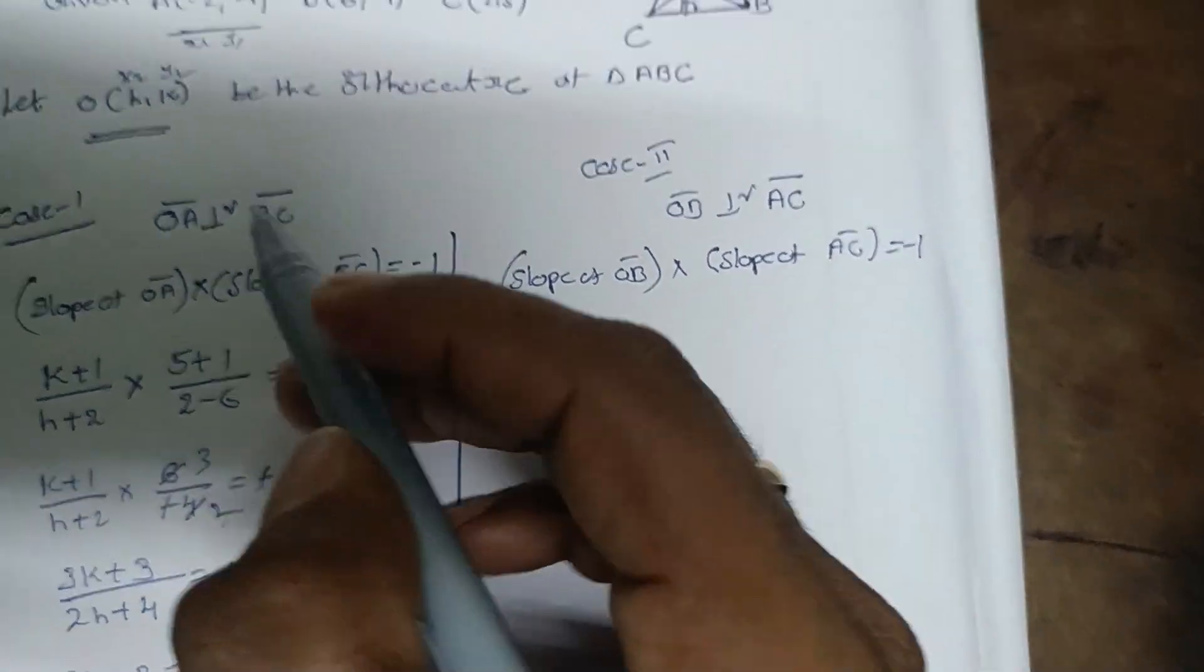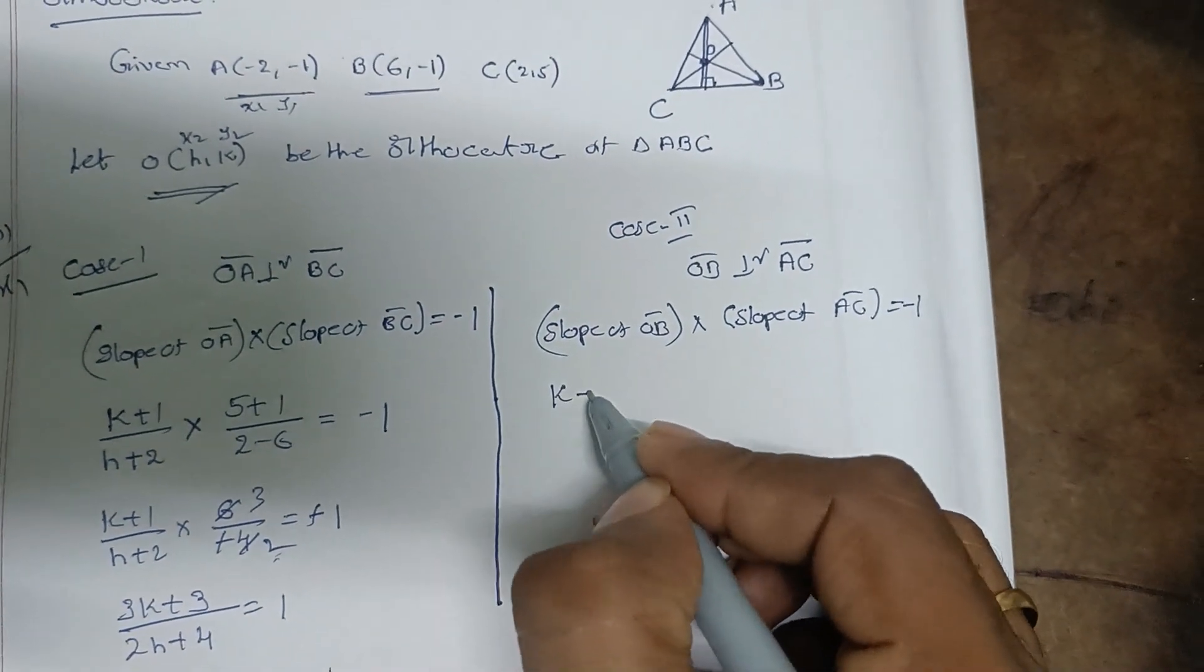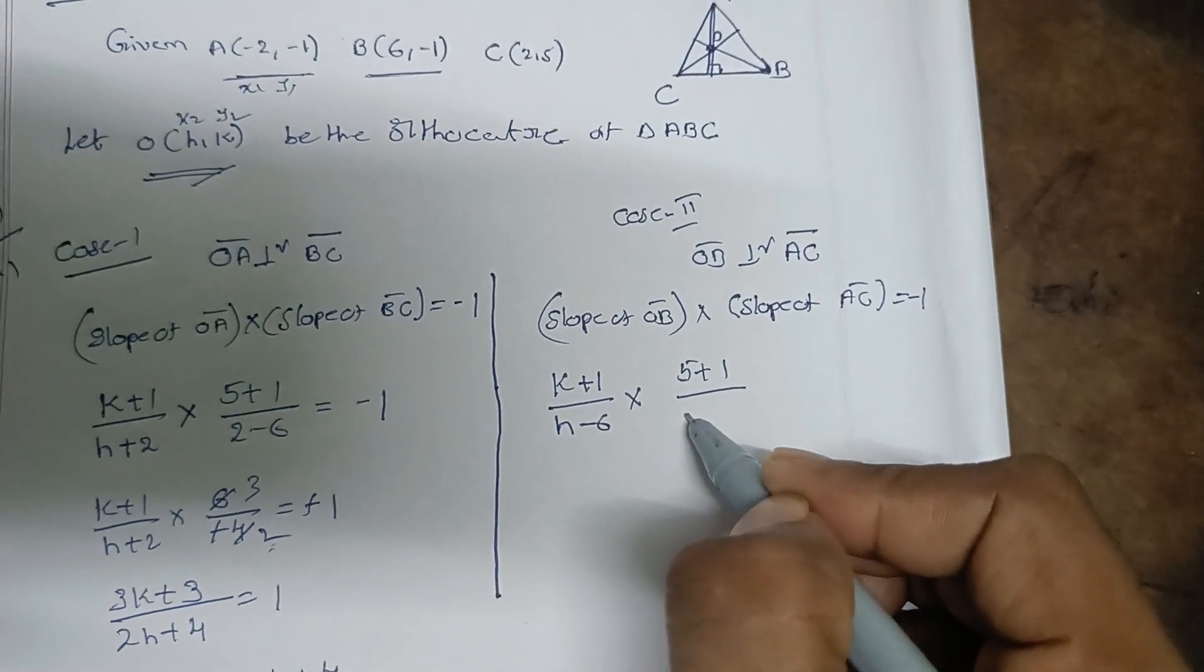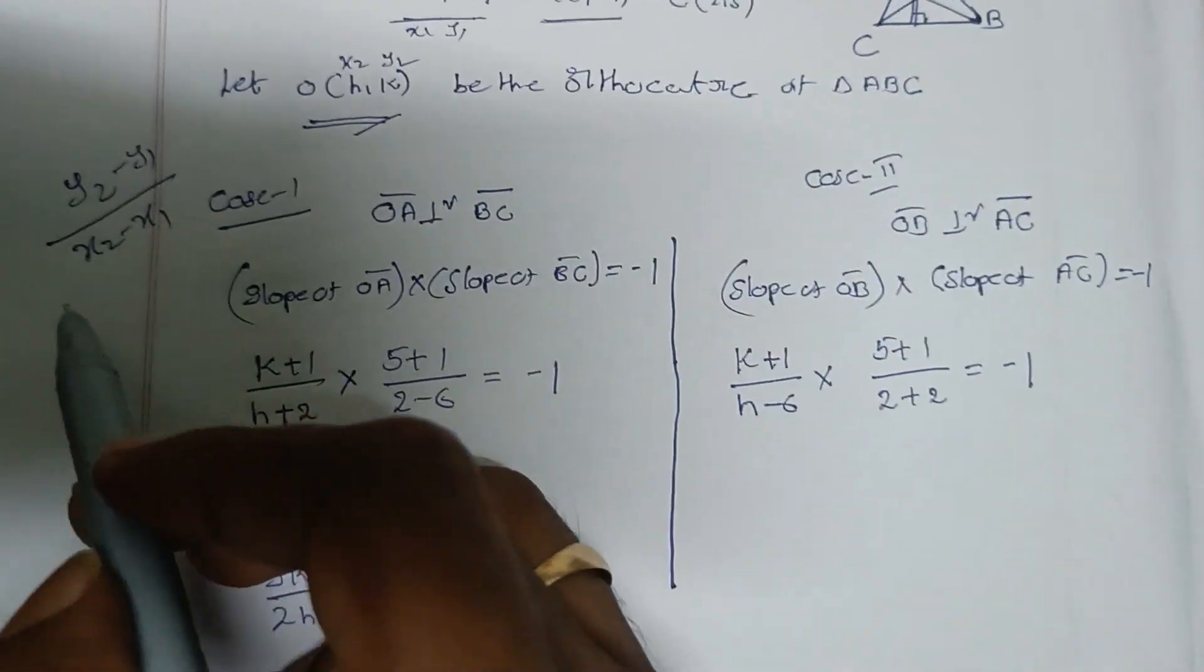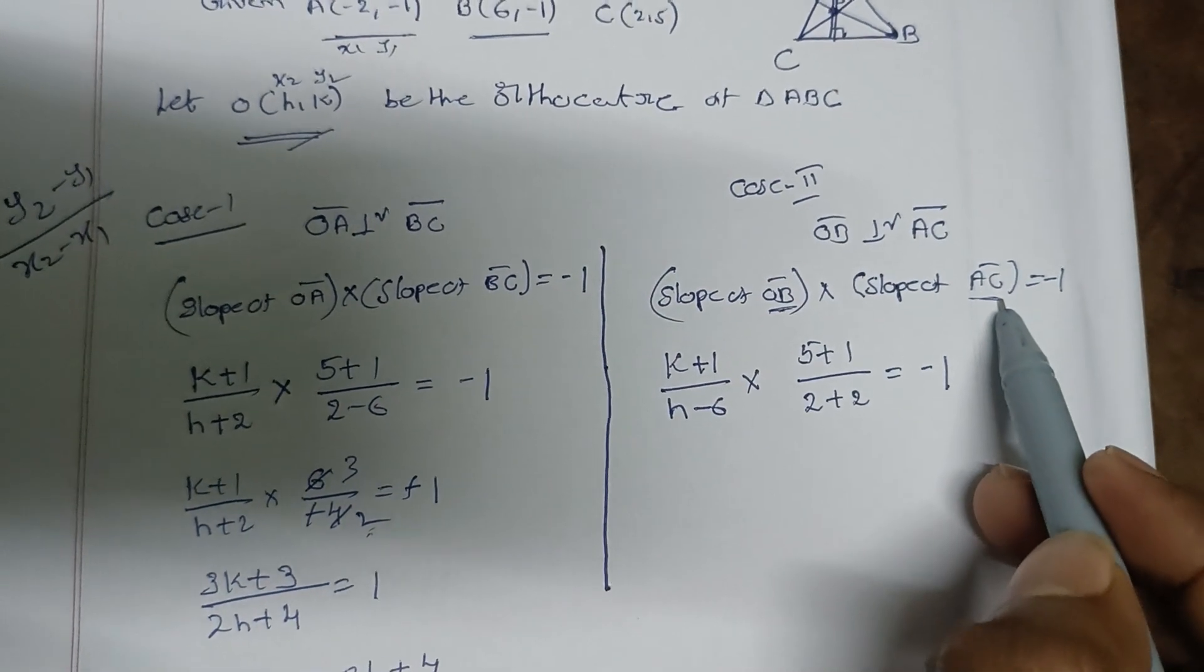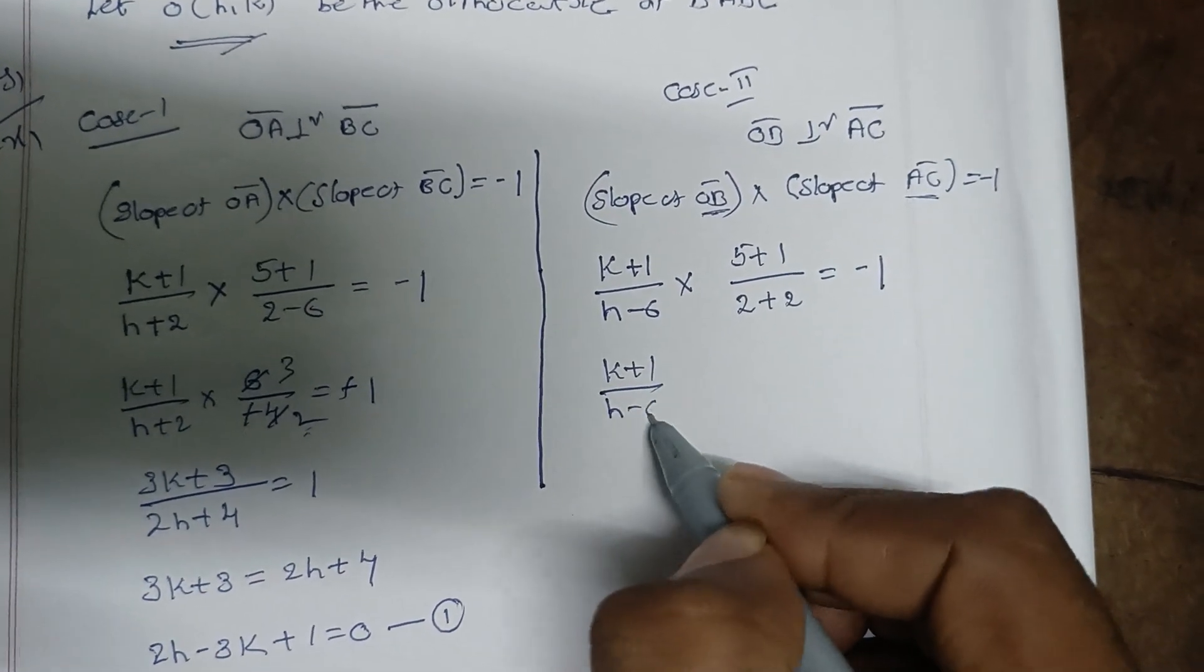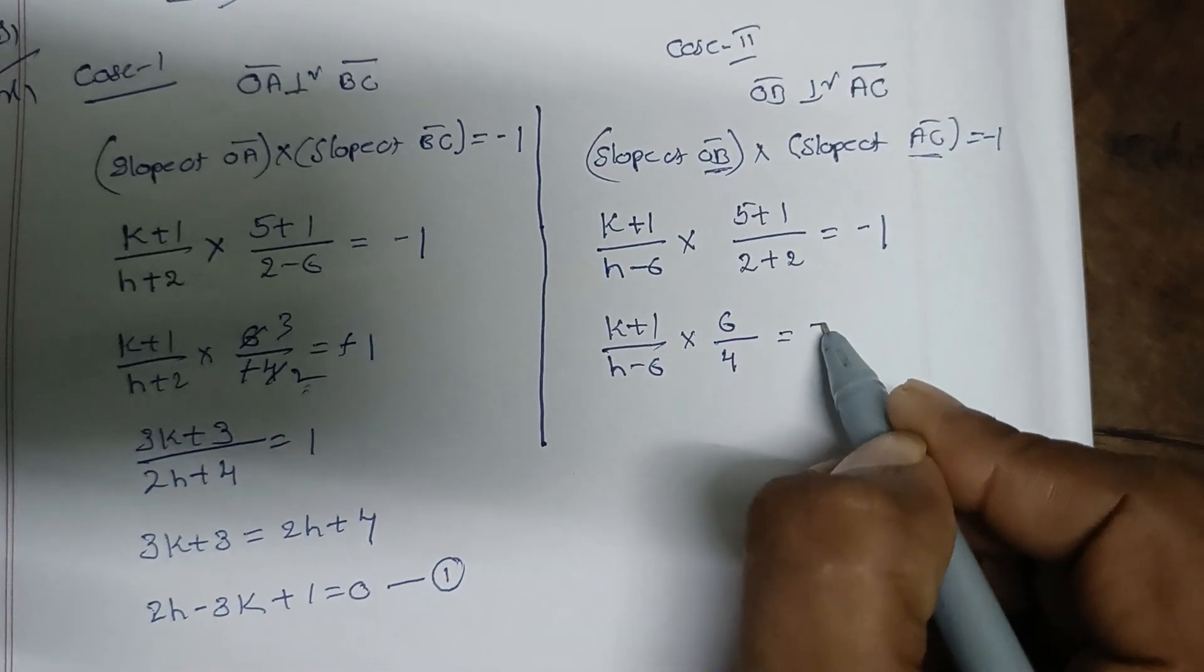For the second case, OB perpendicular to AC: slope of OB is (k - (-1))/(h - 6) = (k + 1)/(h - 6). Slope of AC is (6 - (-1))/(2 - 2), which needs correction. Actually, using points A(2,-1) and C(2,6): (6 + 1)/(2 - 2) is undefined, so we use the correct formula.